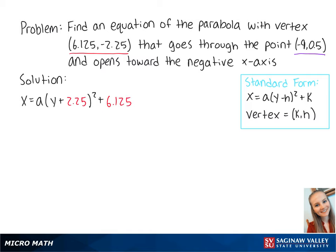Now we plug in the point (-9, 0.5) and solve for a. This gets us -9 = a(0.5 + 2.25)² + 6.125.